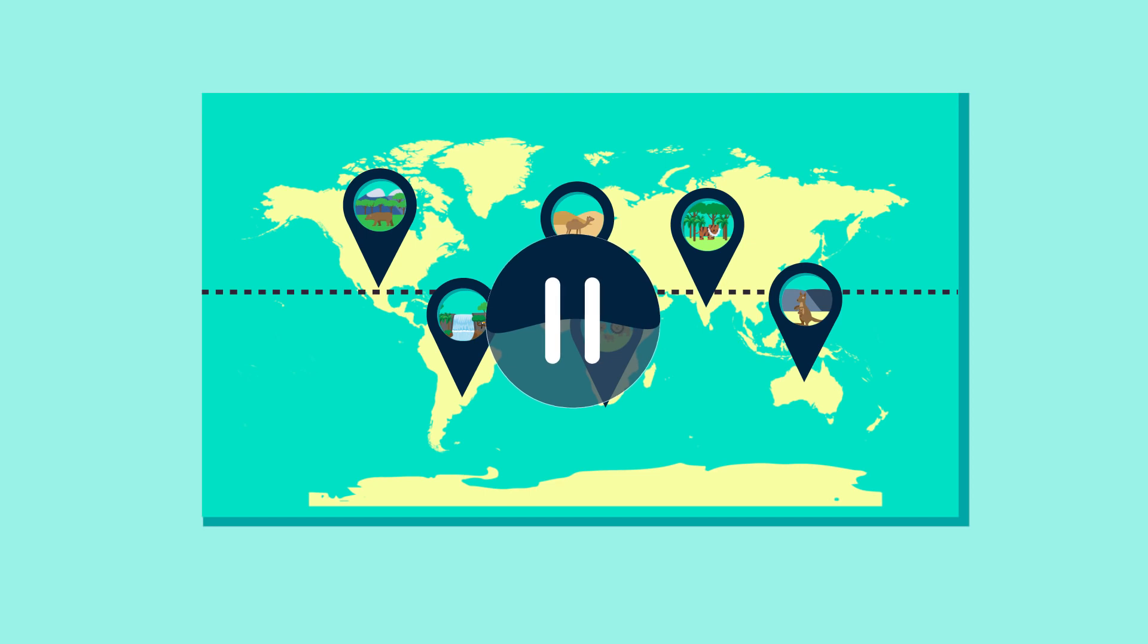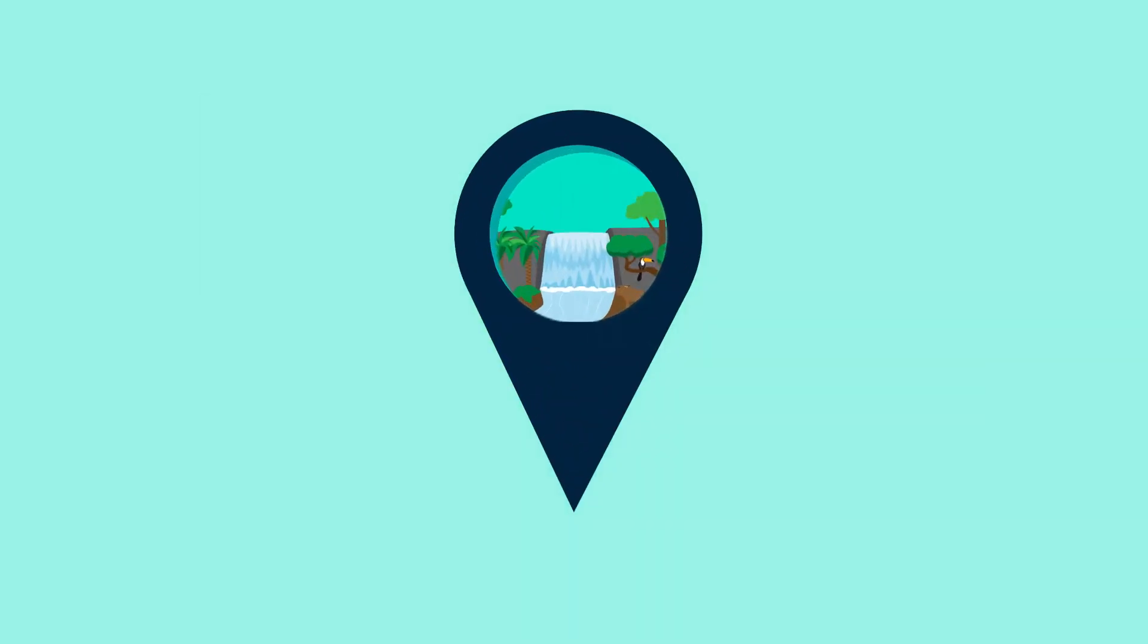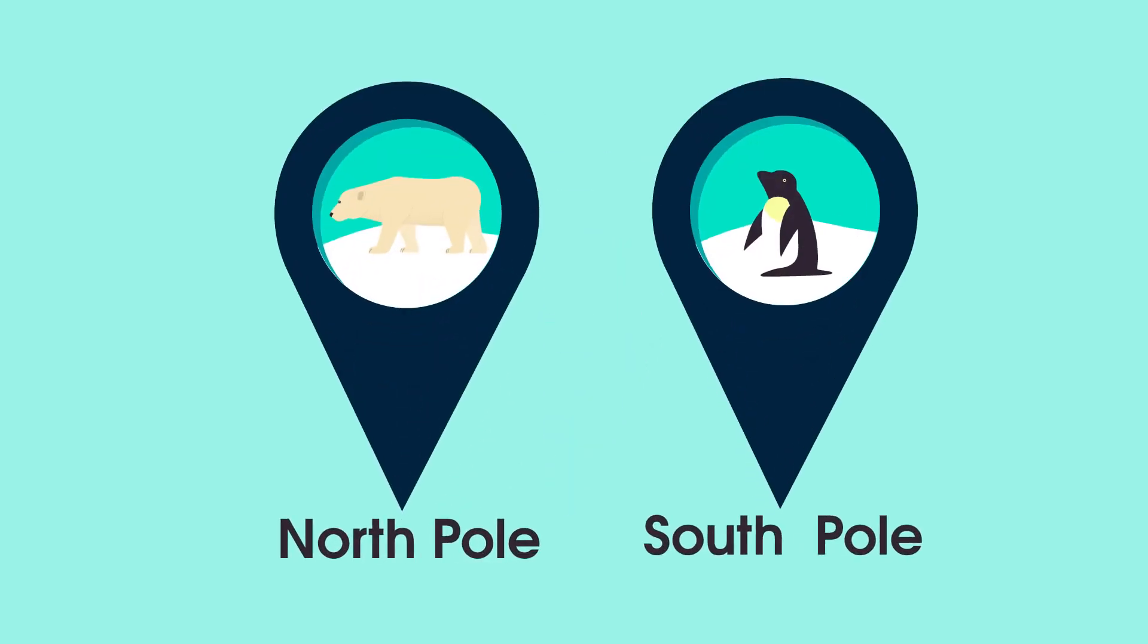Habitats at the equator, such as tropical rainforests, usually have the highest biodiversity. So if you thought habitats at the north or south poles, such as the polar desert, you're correct.